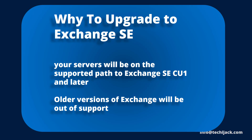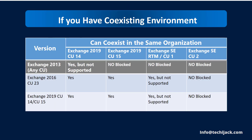Let's also look at coexistence scenarios. If you have Exchange 2013 running in your organization, you can coexist with Exchange Server 2019 CU13 or earlier. After CU14, coexistence is technically possible but not supported by Microsoft. If you install Exchange Server 2019 CU15, coexistence with Exchange 2013 will be blocked — and the same applies to Exchange SE RTM and CU1.